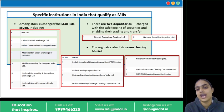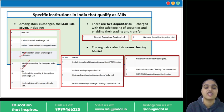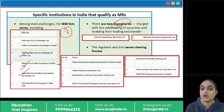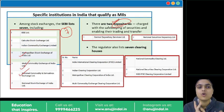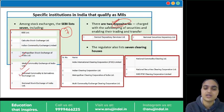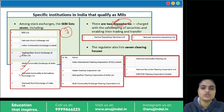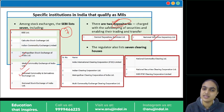All seven exchanges are MIIs. Regarding depositories: we have two depositories qualified as MIIs. Depositories are where our securities — held in our DEMAT accounts in electronic form — are safely kept and transferred. Both depositories, the Central Depository Services Limited and the National Securities Depository Limited, are MIIs. Then the seven clearing houses also qualify as MIIs: India International Clearing Corporation, India Clearing Corporation, Metropolitan Clearing Corporation, Multi Commodity Exchange Clearing Corporation, National Commodity Clearing Limited, National Securities Clearing Corporation, and NSE IFSC Clearing Corporation.